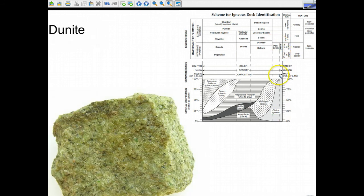And dunite as well. You could see a high percentage. If not all of it, all of it's olivine. Therefore, it's very green. Olivine is green.